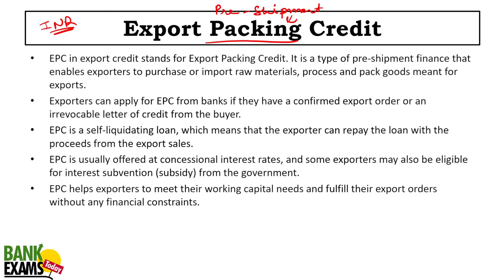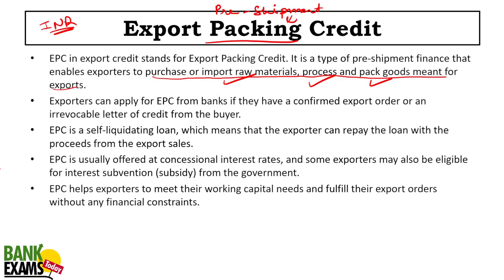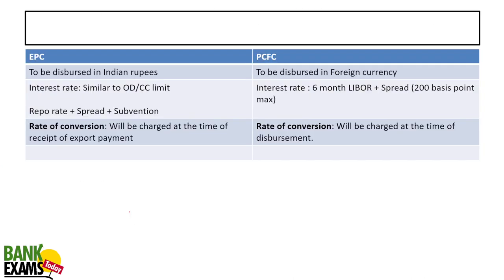EPC is a type of export finance that enables exporters to purchase or import raw material, process, and pack goods meant for export. For buying raw materials, processing, operational expenses, and packing, you get pre-shipment credit. The bank gives you the option of either EPC or PCFC.